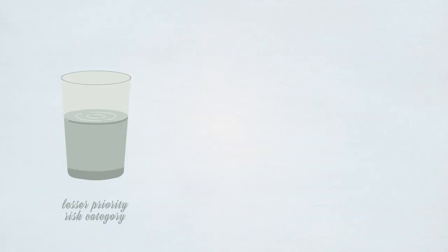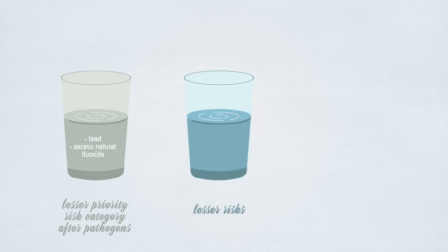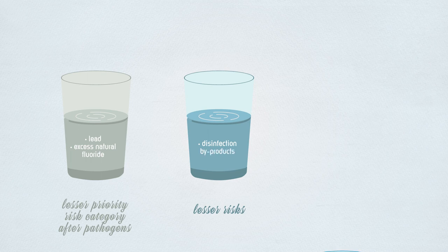The second lesser priority risk category features reasonably certain but substantially less pervasive risks such as lead and excess natural fluoride, which should be identified and addressed as necessary. Common but comparatively uncertain and otherwise lesser risks in the third risk category require a rational precautionary response, and this third level includes disinfection byproducts.